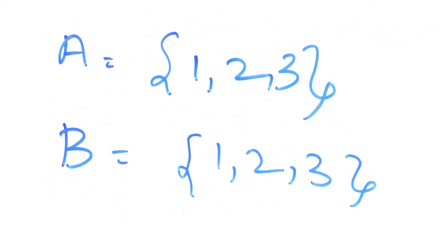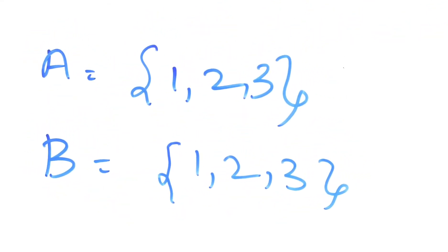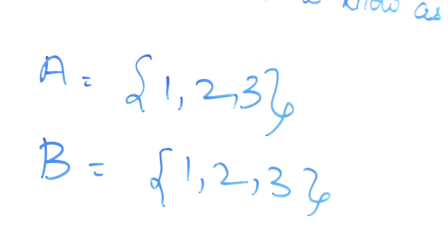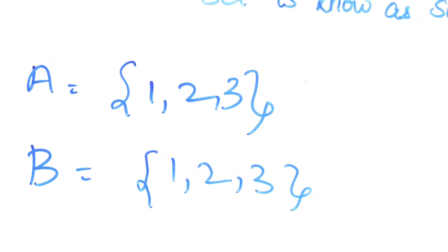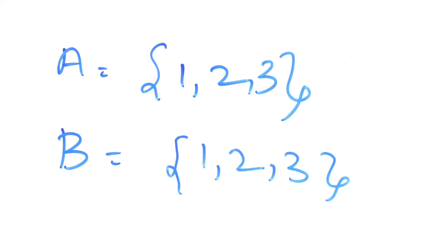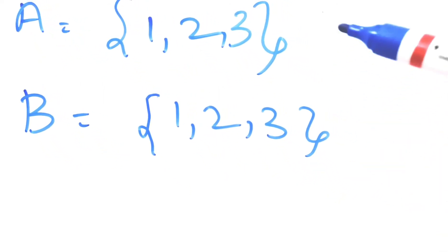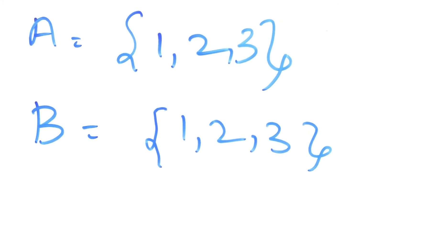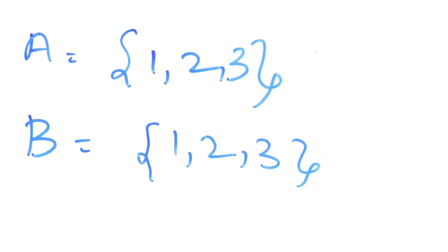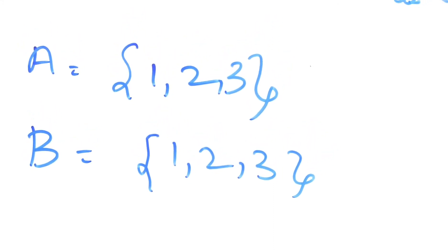If I had a set A is equal to 1, 2, 3 and I have one more set B is equal to 1, 2, 3, they are equal sets. Equal sets are also proper subsets of each other. A subset simply means every element in the subset should be present in super set.